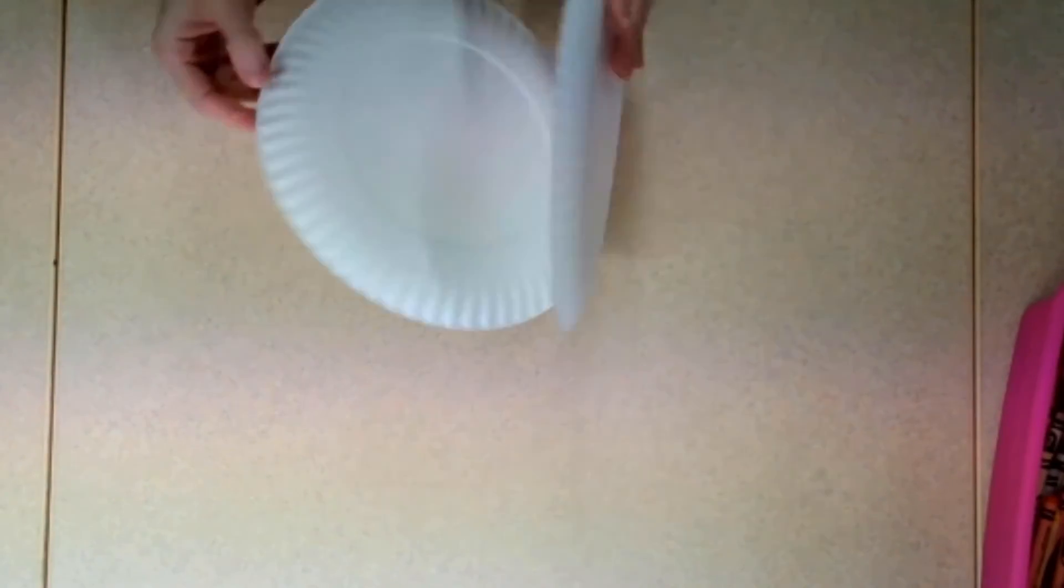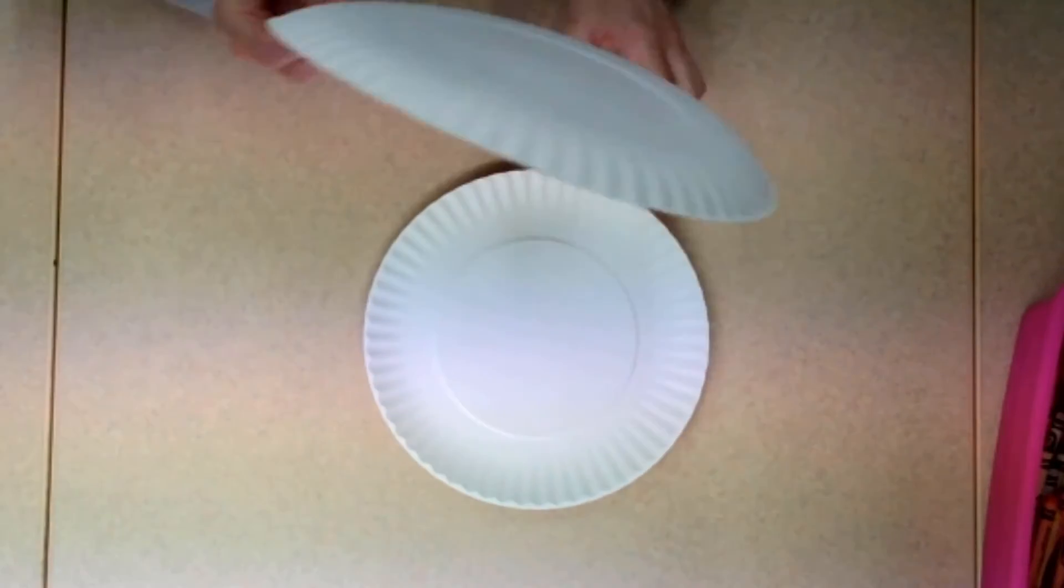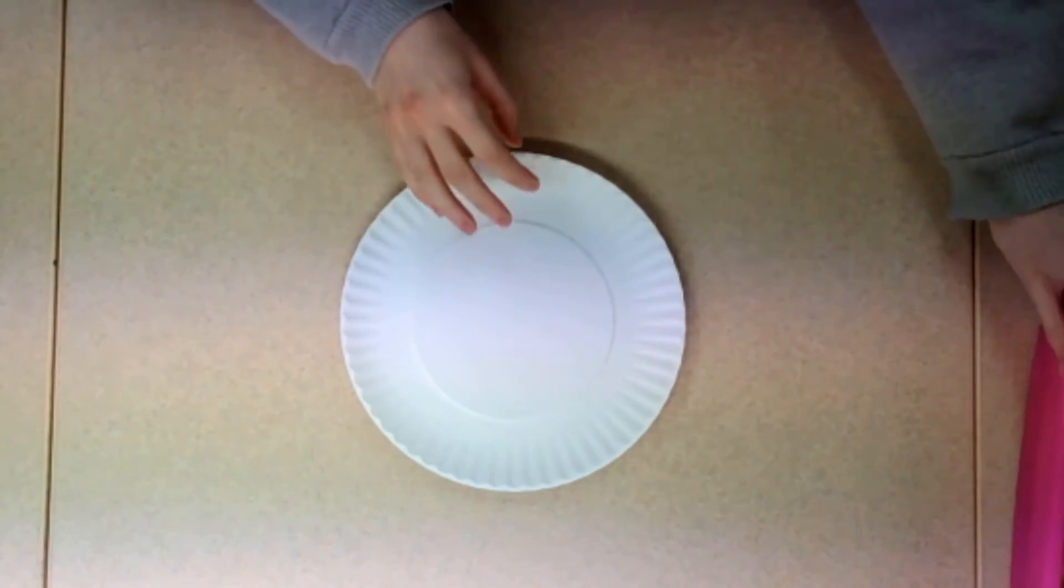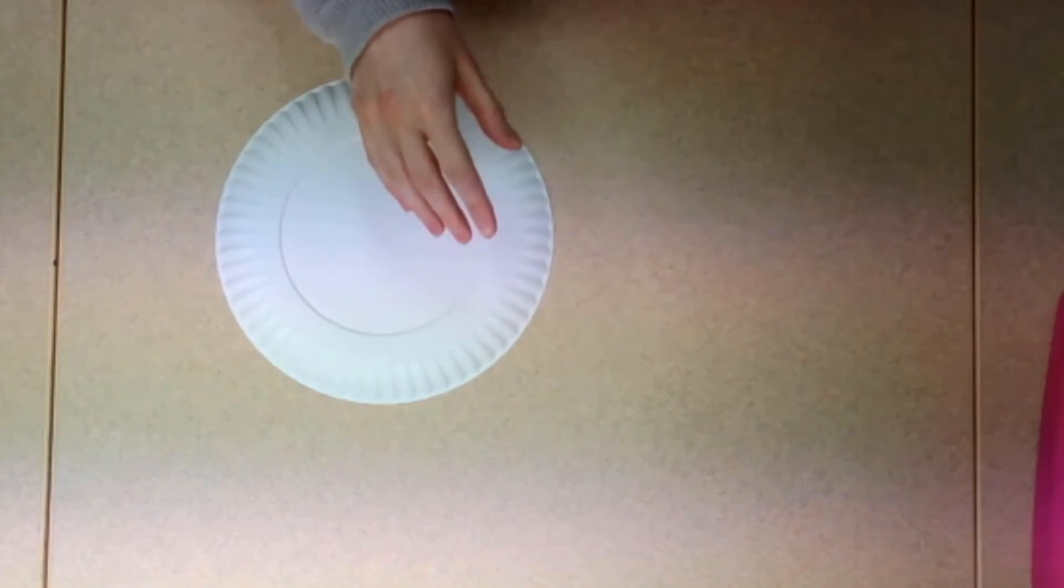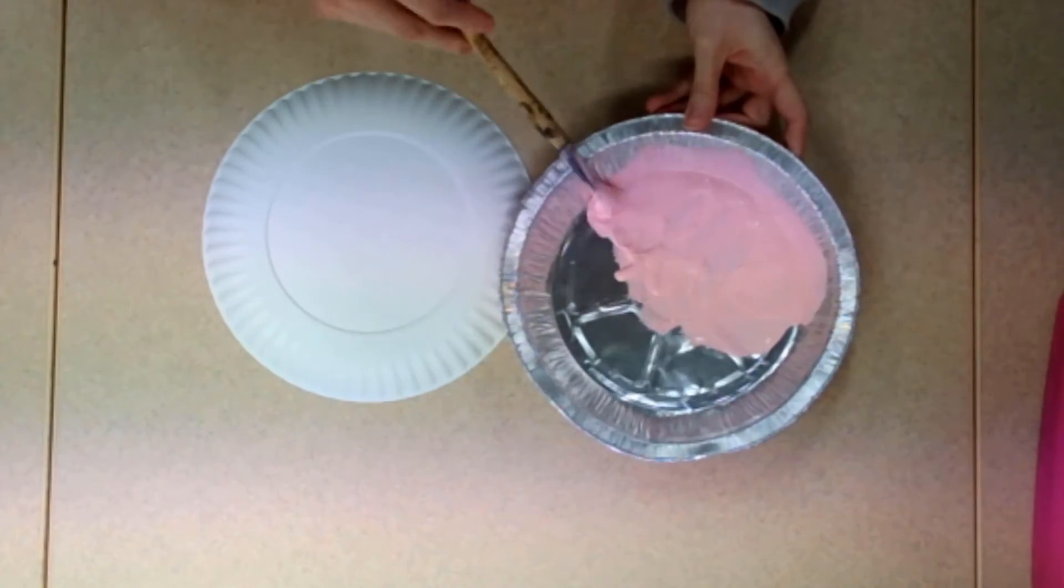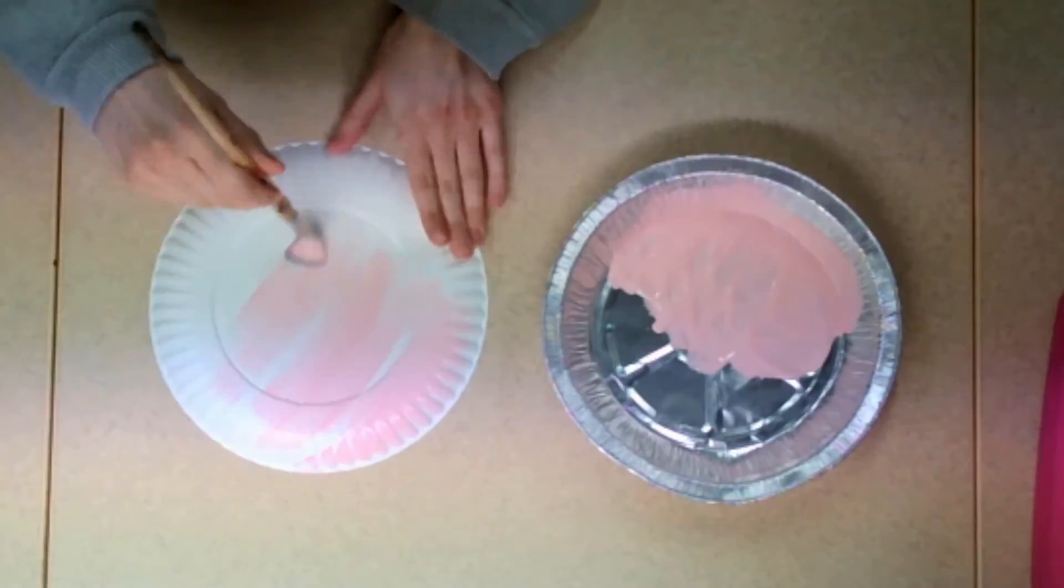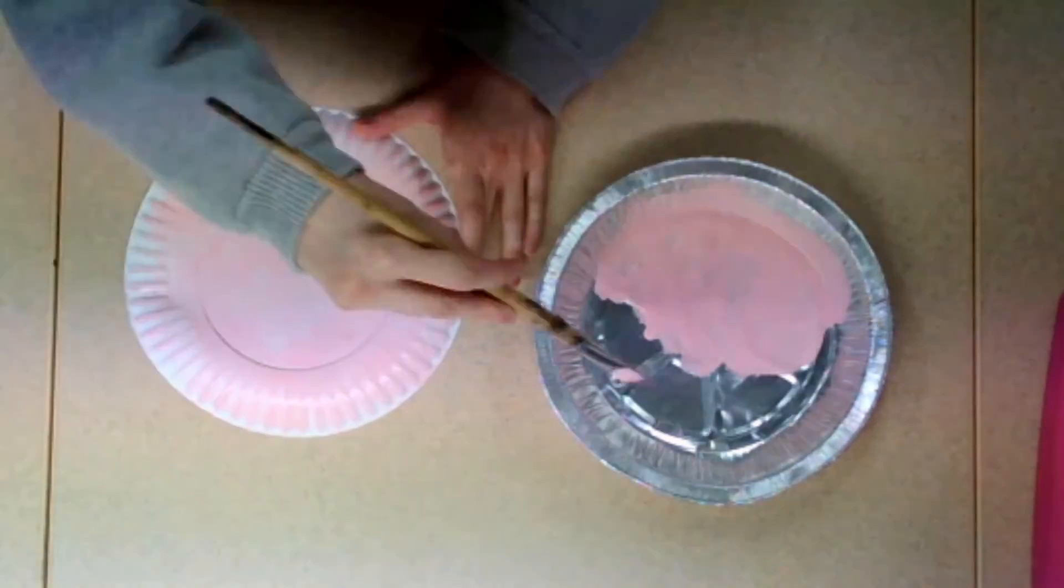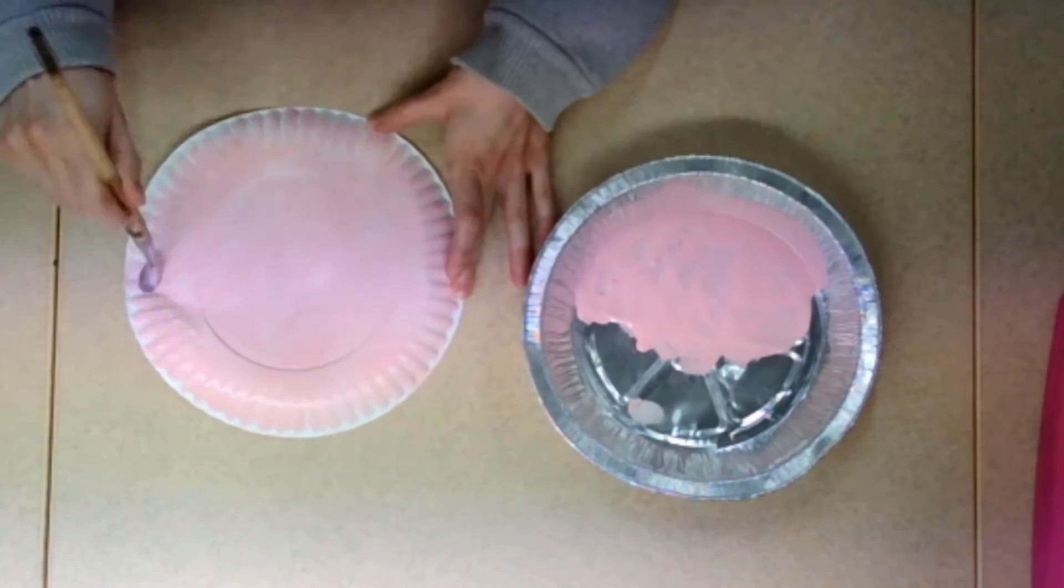Start out by coloring one of your paper plates. You can use paint, markers, or crayons. Set your colored paper plate aside.